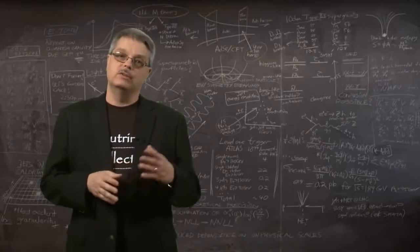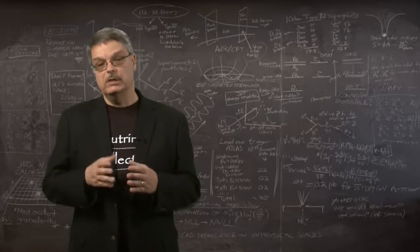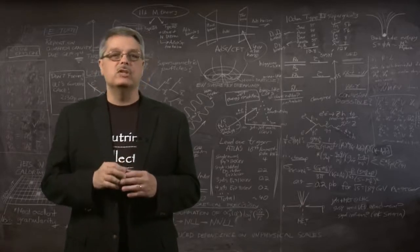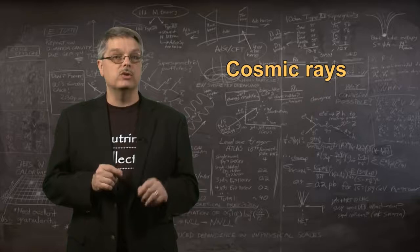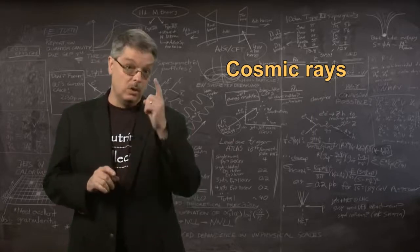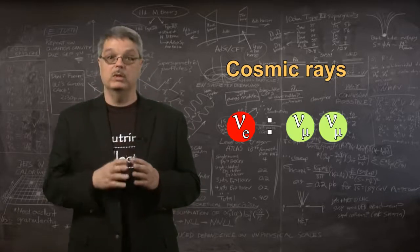While the solar neutrino deficit could have been due to improper measurement or calculation, it is very difficult to imagine how neutrinos from cosmic rays could occur in any ratio other than one electron-type to two muon-types.